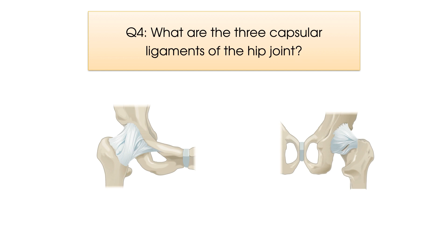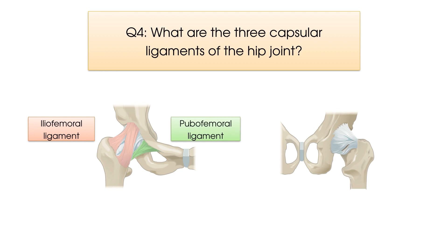The three ligaments are the iliofemoral ligament, the pubofemoral ligament, and the ischiofemoral ligament.